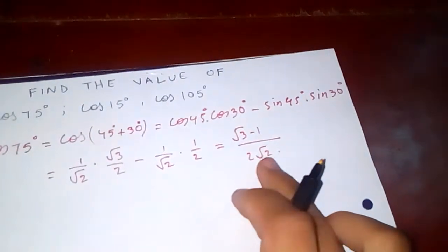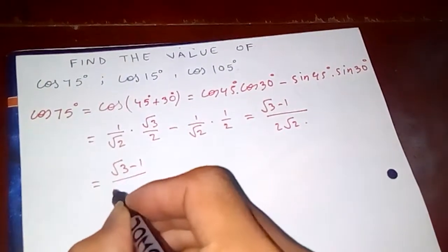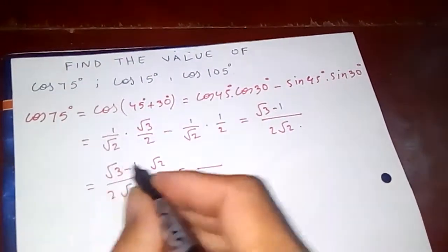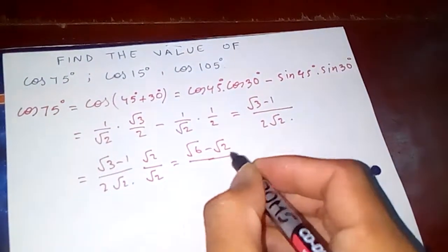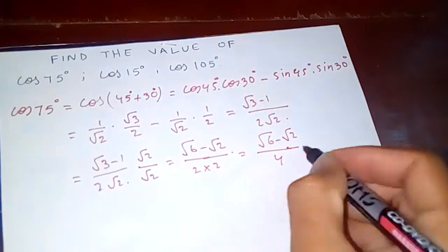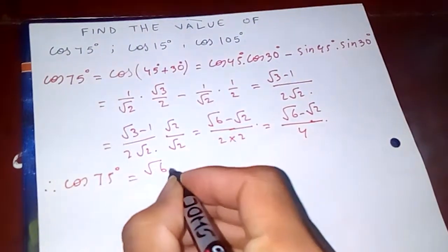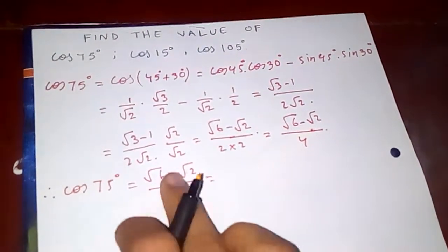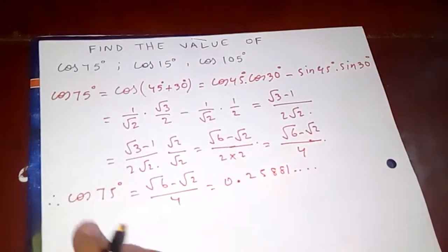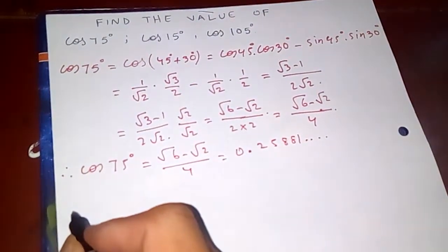We want to cancel out the √2 in the denominator, so we rationalize by multiplying by √2. This gives √2 × √3 = √6, minus √2, divided by 2 × 2 = 4. Therefore cos 75 degrees is (√6 − √2)/4, which is approximately 0.25881.